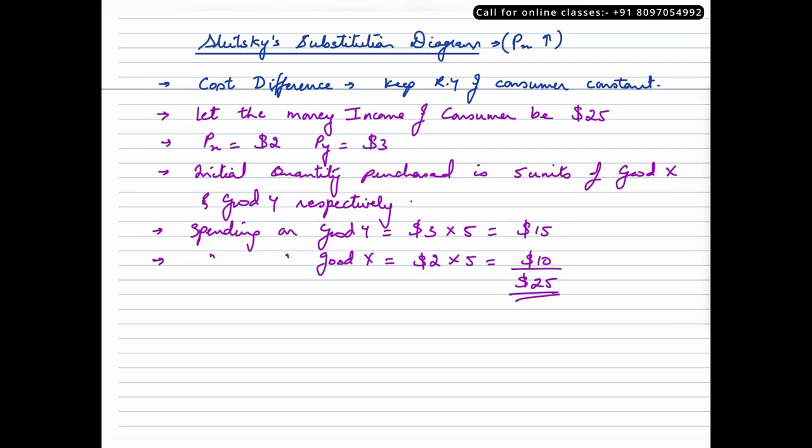So as a total, consumer is spending the whole of his money income which is $25. So as mentioned earlier, we are focusing on a rise in price of commodity X. So let the price of commodity X be $3.